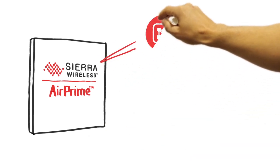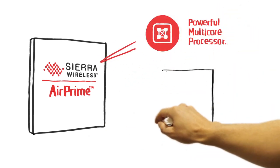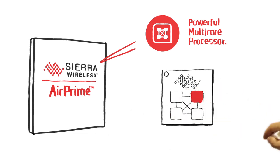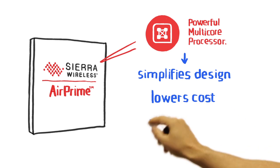Next-gen AirPrime modules come with a powerful multi-core processor, which includes a dedicated application core and integrated M2M functionality that simplifies design, lowers total system cost, and reduces power consumption.